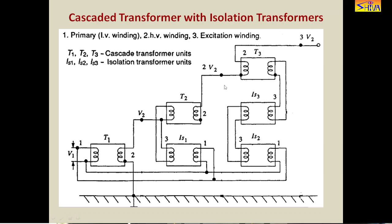In addition to these cascaded transformers there are three isolation transformers: isolation transformer 1, isolation transformer 2, and isolation transformer 3. Winding one is the primary winding, two is the secondary that is the high voltage winding, and three is the excitation winding. The same input is given to isolation transformer number one, number two, and number three.